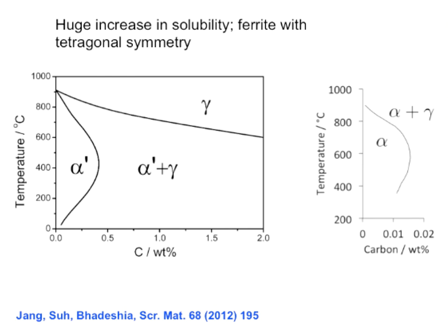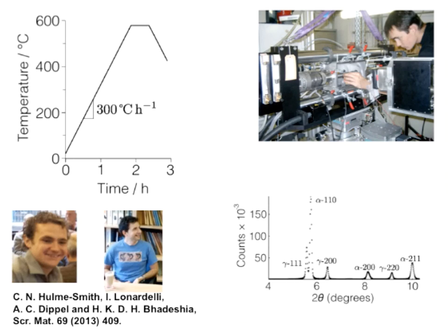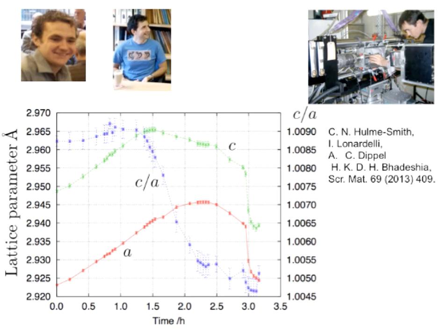These are calculations, so we needed actual measurements, which we carried out using synchrotron X-ray diffraction. To cut a long story short, we detected the tetragonality, and as we heated the sample to allow equilibrium to shift toward cubic, the c/a ratio tended toward 1 — confirming the transformation to cubic ferrite.